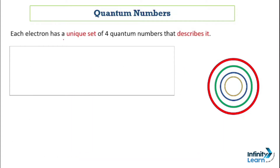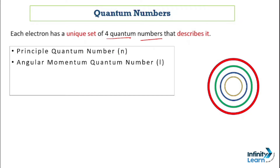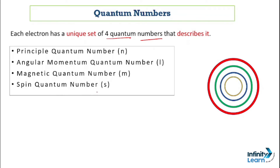What are quantum numbers? Each electron has a unique set of four quantum numbers that basically describe it. We have four quantum numbers: first is the principal quantum number denoted by small n; second is the angular momentum quantum number, also known as azimuthal momentum quantum number; third is the magnetic quantum number denoted by small m; and the last is the spin quantum number denoted by small s. All of these together help find the location of an electron — not the accurate location, but the highest probability of finding an electron's location.